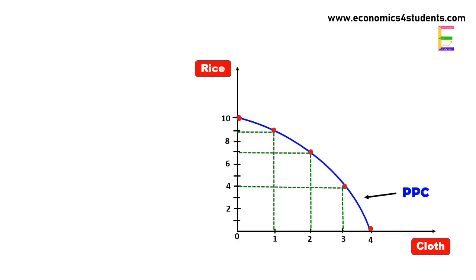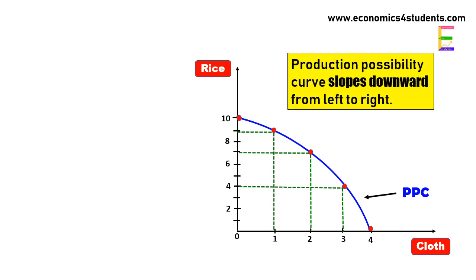In this figure we observe that production possibility curve slopes downward from left to right. This is because the PPC is drawn on the assumption of full utilization of resources.